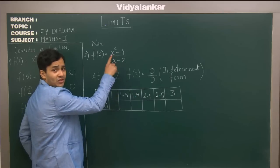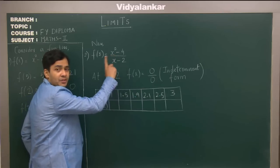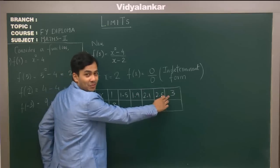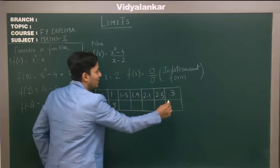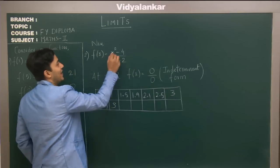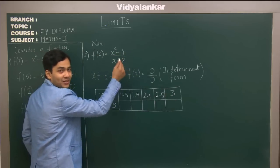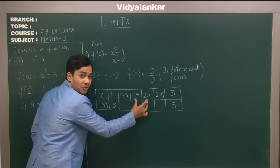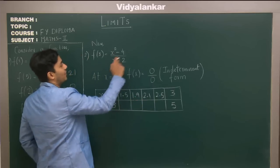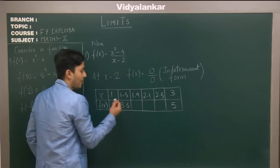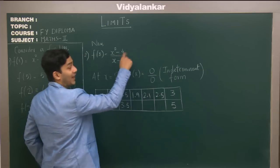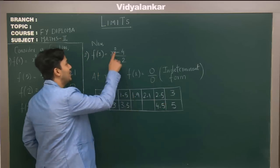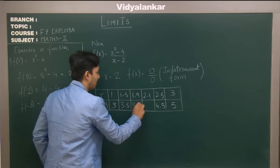When x = 1, the function gives (-3)/(-1) = 3. When x = 3, it gives (9 - 4)/(3 - 2) = 5/1 = 5. When x = 1.5, the result is 3.5. When x = 2.5, it works out to around 4.5. When x = 1.9, you get 3.9.